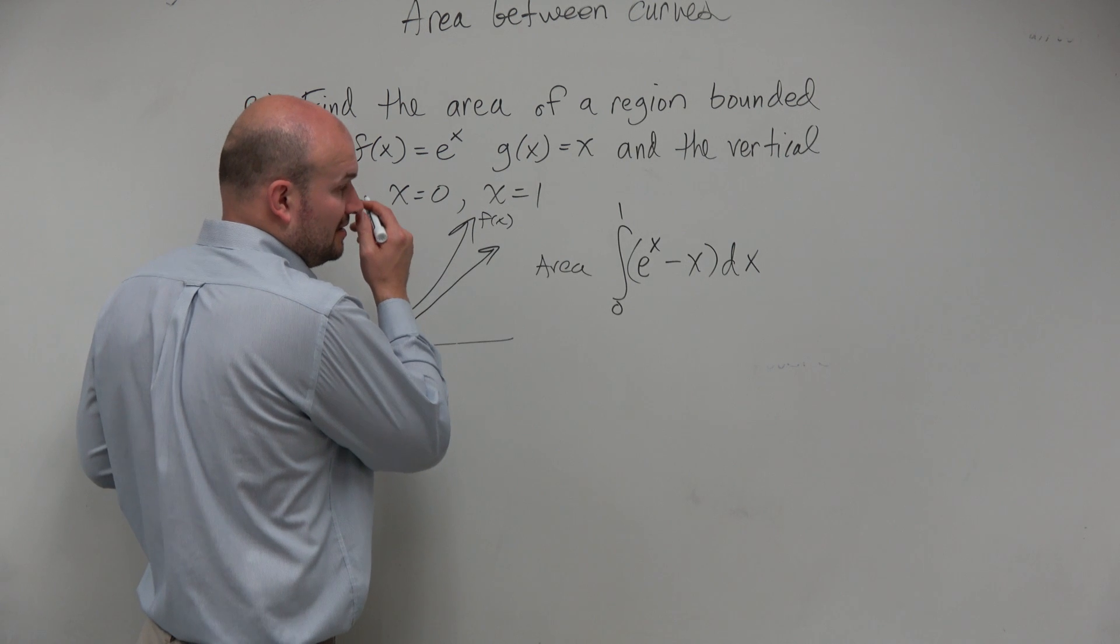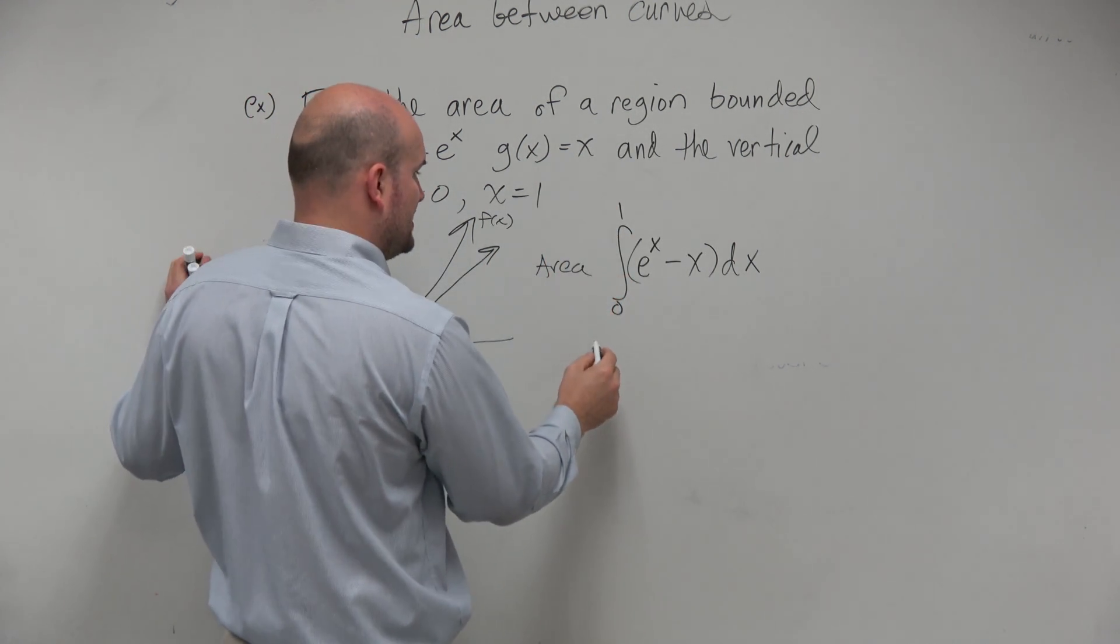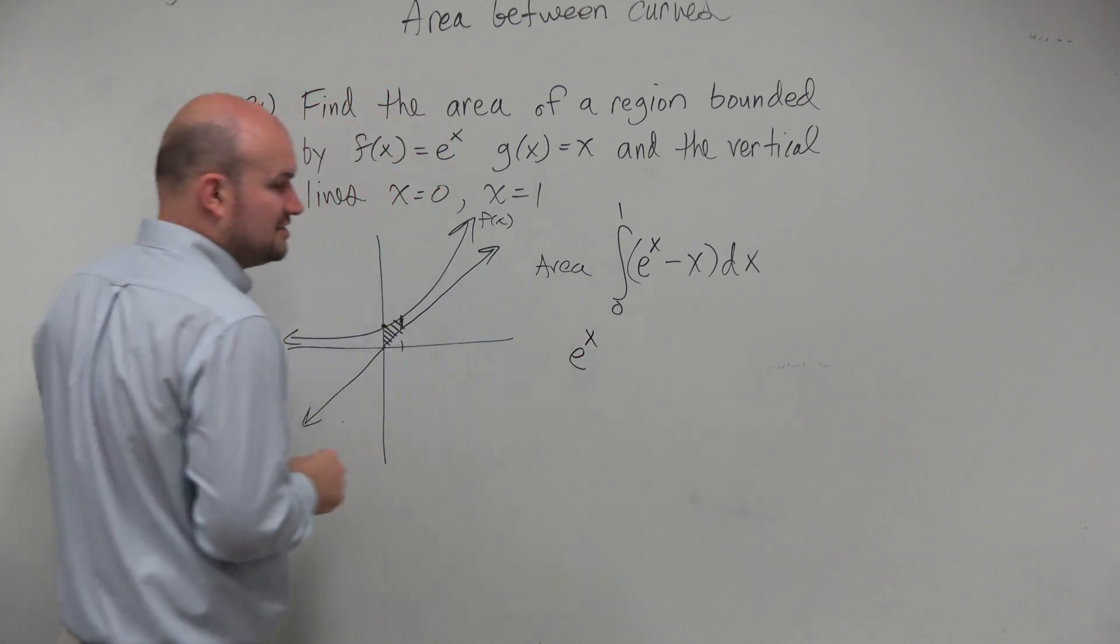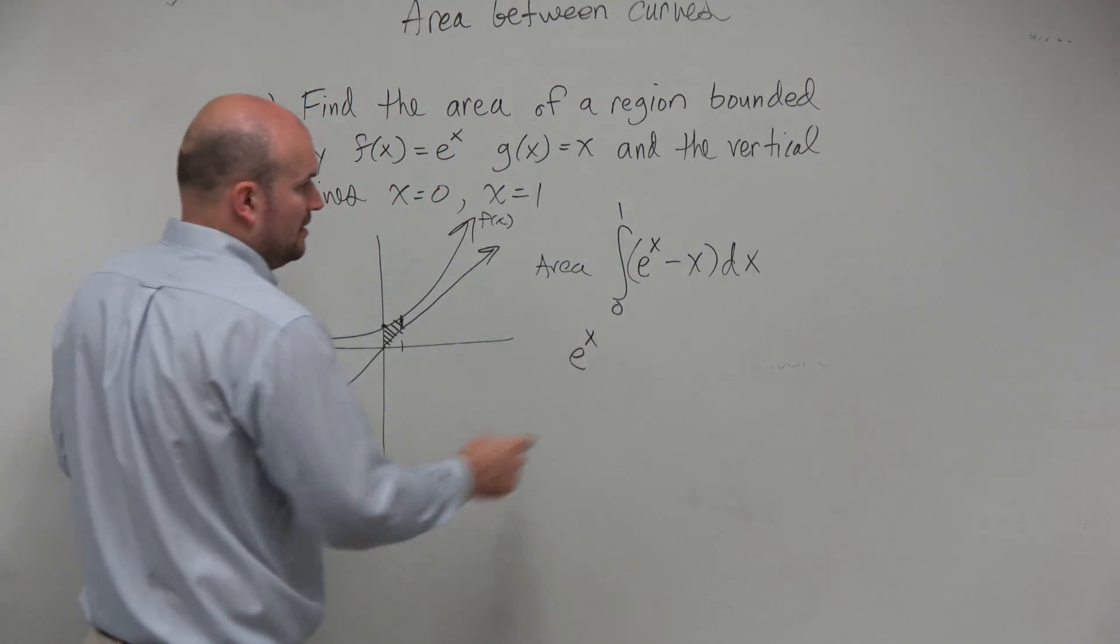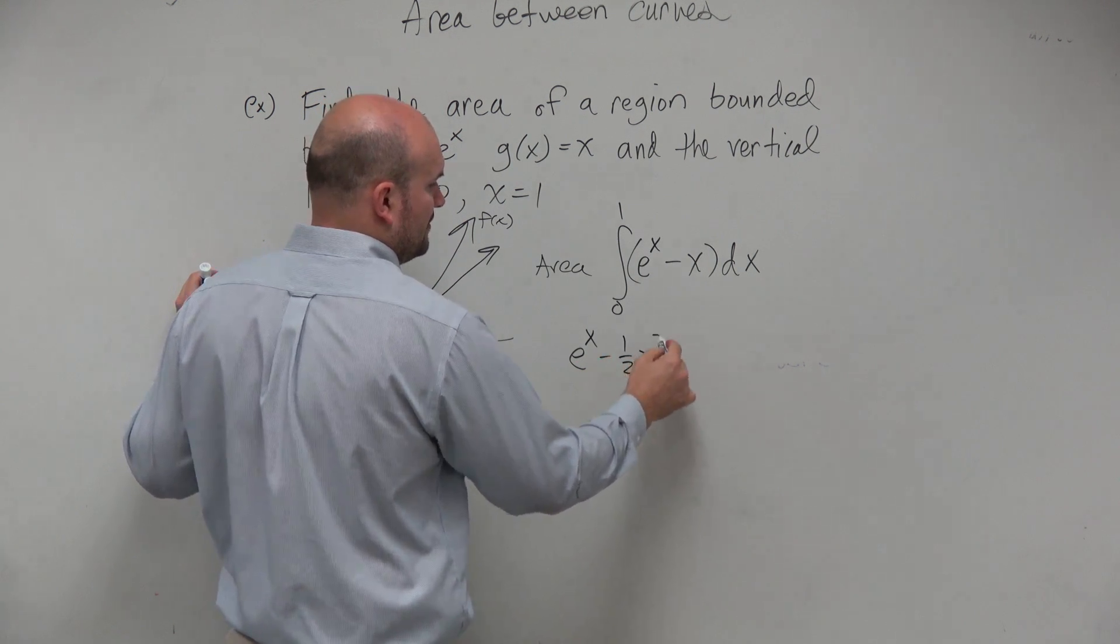So when we go ahead and integrate, we have integral of e to the x is just e to the x. And then we're going to have minus 1/2 x squared.